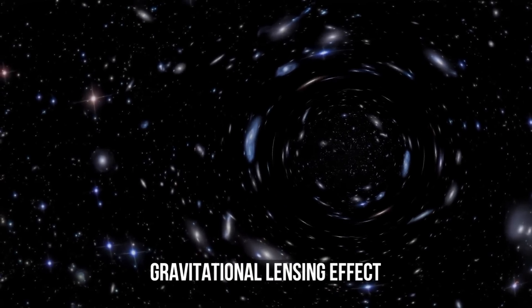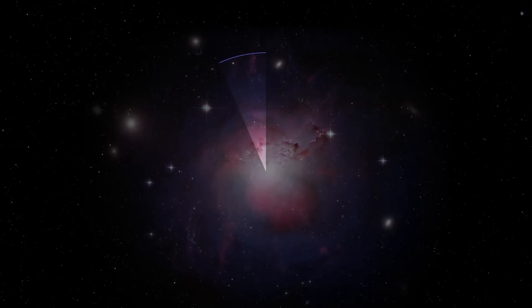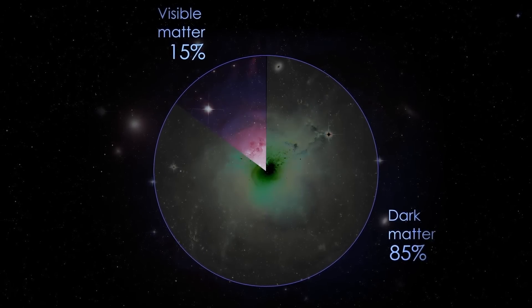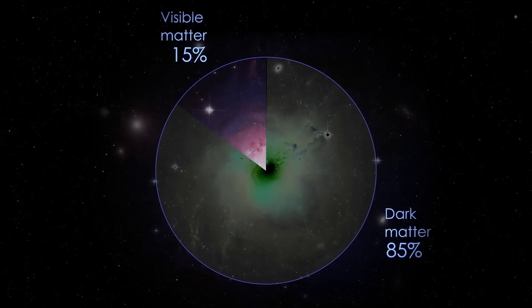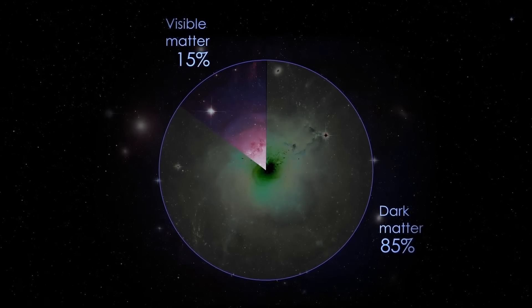Astronomers have found hundreds of these dark lenses across the skies. Eventually, modern calculations show that just 15% of our universe is ordinary matter, and 85% of it is dark matter.